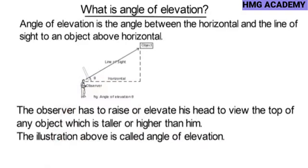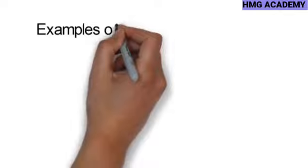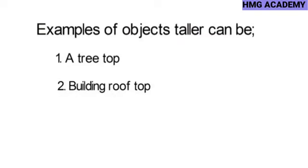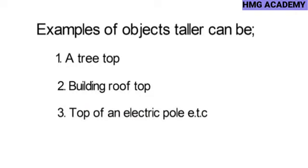The illustration above is called angle of elevation. The angle theta is the angle of elevation, and the arrow is pointing to it. Examples of objects taller than you include a treetop, a building rooftop, and the top of an electric pole. In viewing these, you have to raise your head — and the angle formed is called the angle of elevation.